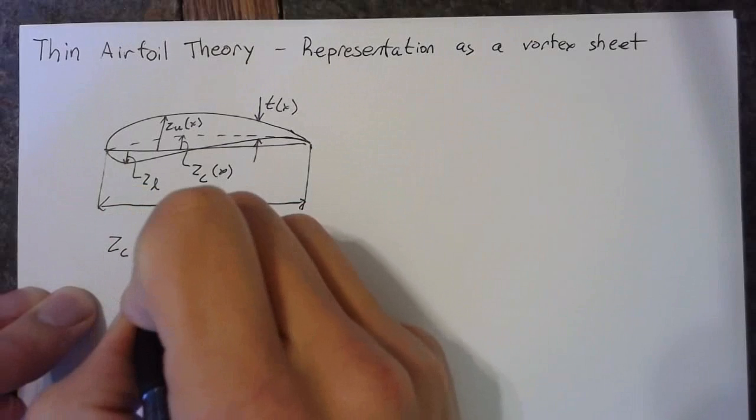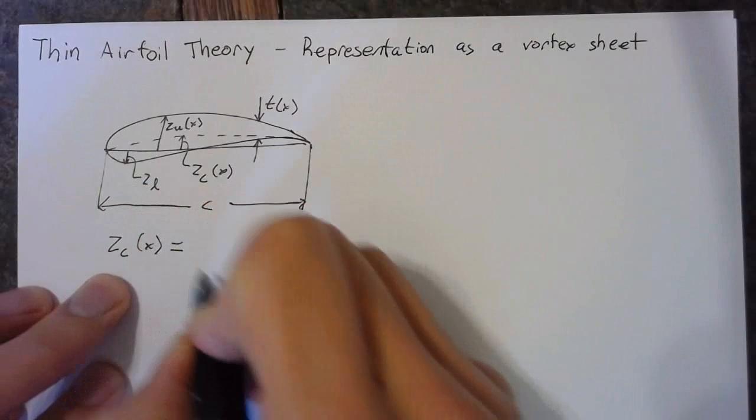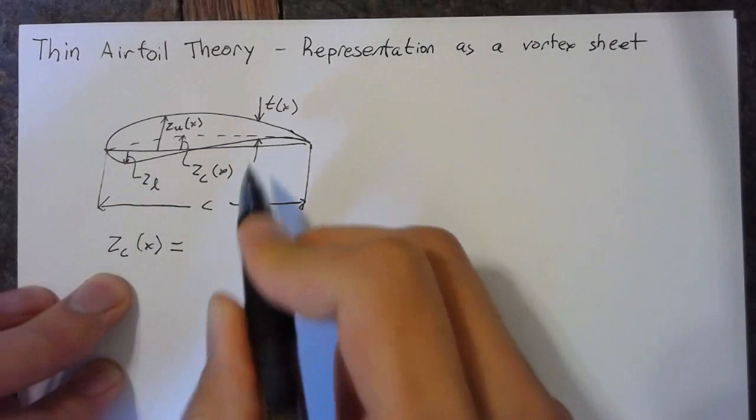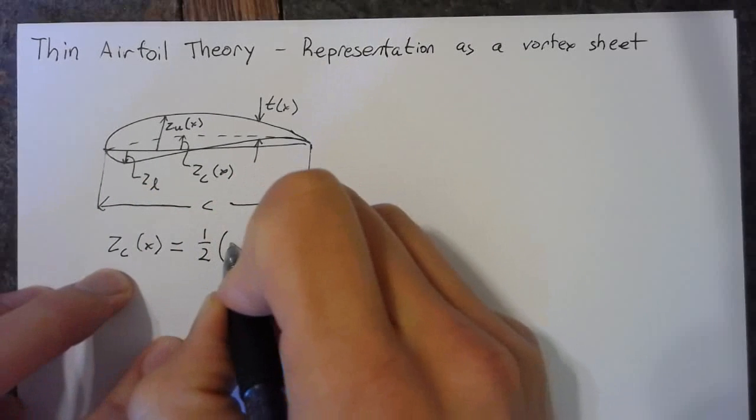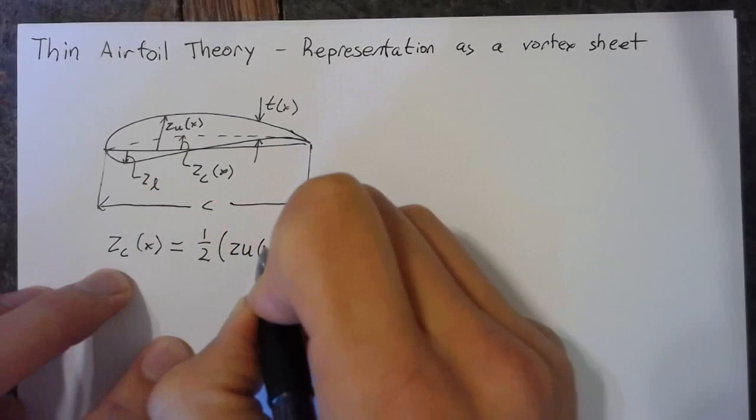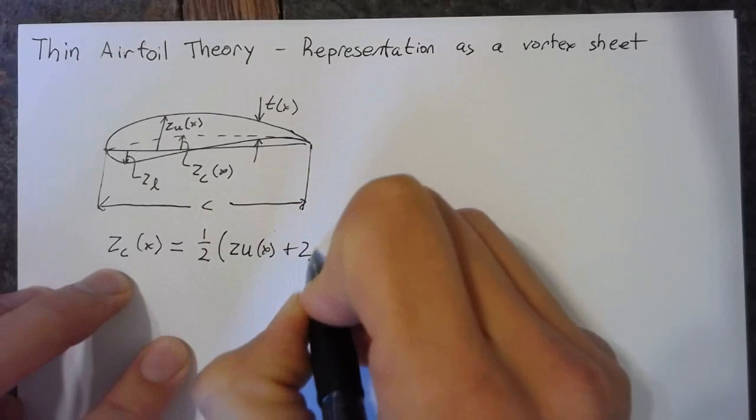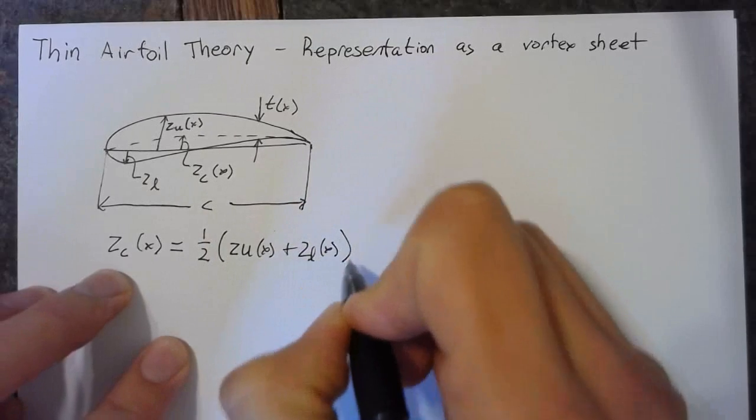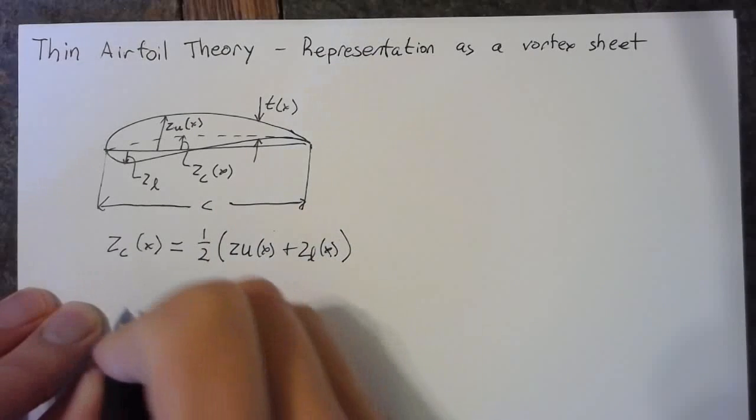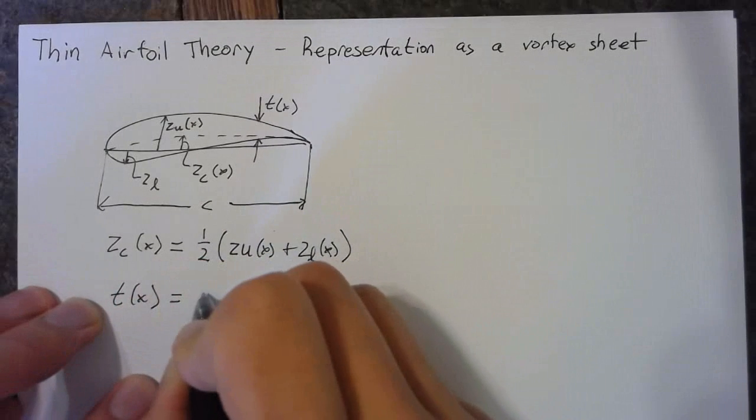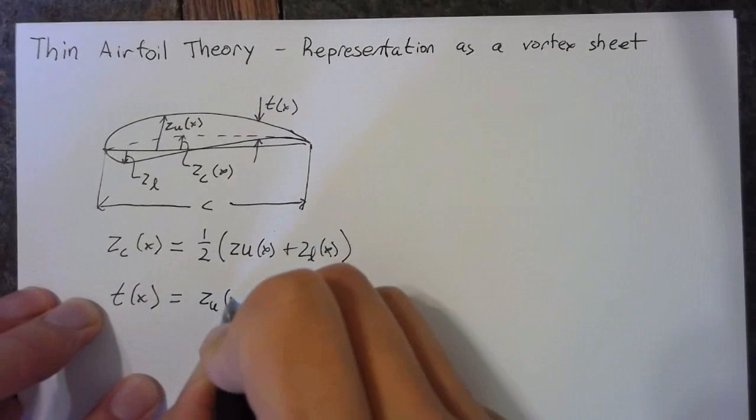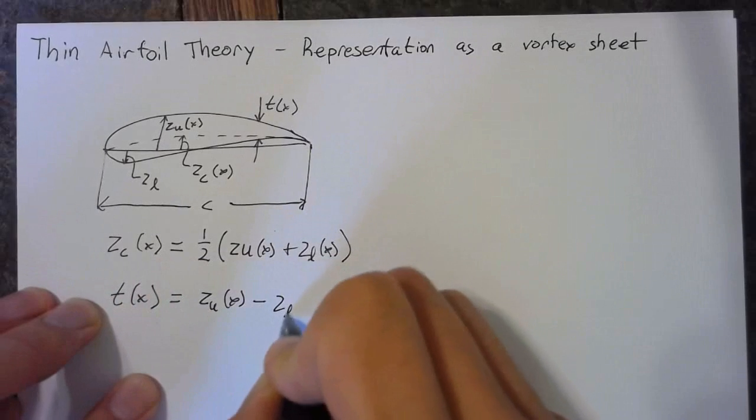Just for a couple more definitions, let's go ahead and mathematically define the camber line and the thickness. The camber line is going to be one half of zu of x plus zl of x. Our thickness is going to be just zu of x minus zl of x.